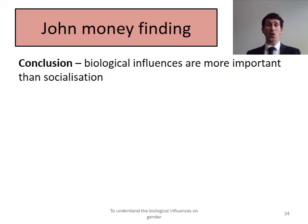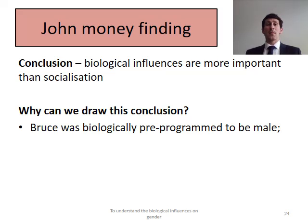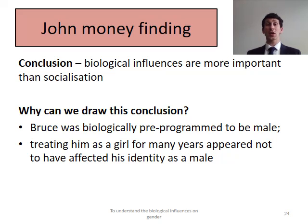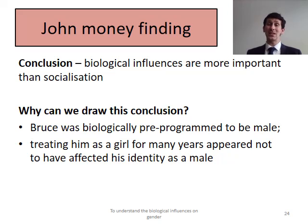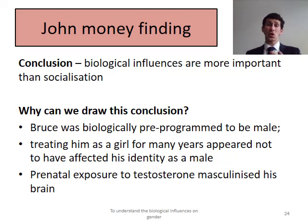What does the Money study of David Reimer actually tell us? It tells us that biological factors are more important than socialisation. David Reimer was biologically pre-programmed to be male, and treating him as a girl for many years did not appear to have any effect on his identity as a male. From conception, he was XY — genetically male. During prenatal development, his brain had been masculinized by testosterone. So he was always biologically pre-programmed to be male, and bringing him up as a female didn't work. Although Money's theory of neutrality contradicts the biological theory, his main study on David Reimer actually goes against his own theory.